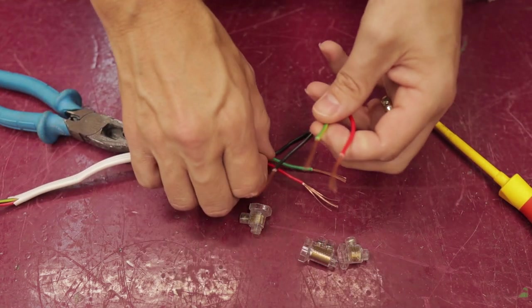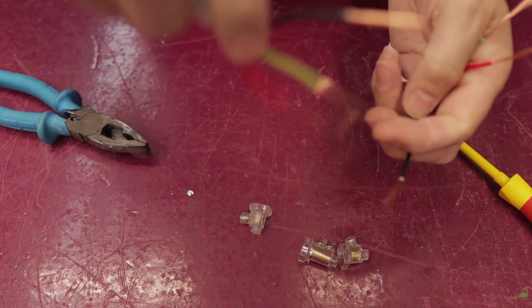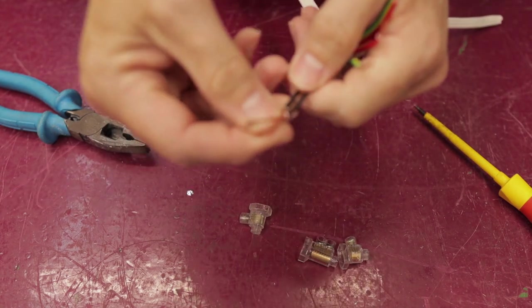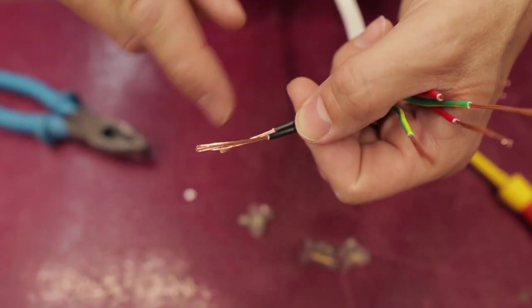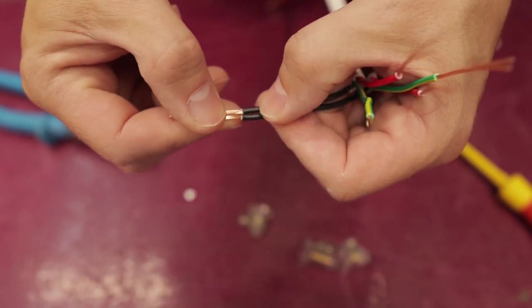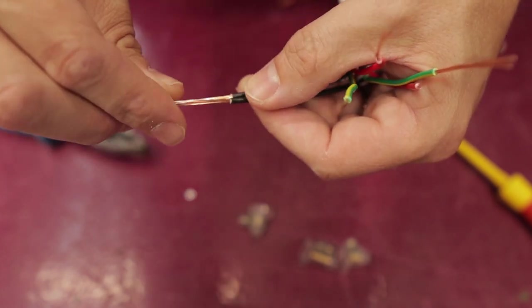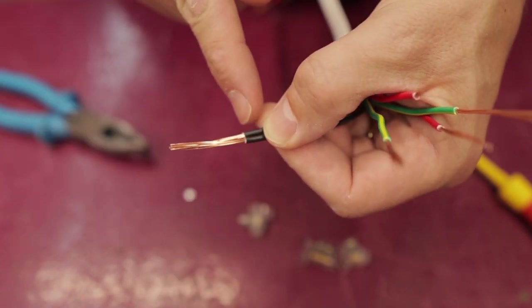To do this, we take our wires and in this case I'm going to use the neutral first. When I do this, I need to make sure that I line up the insulation where I've stripped the cable. The insulation has to be even, it has to be the same.